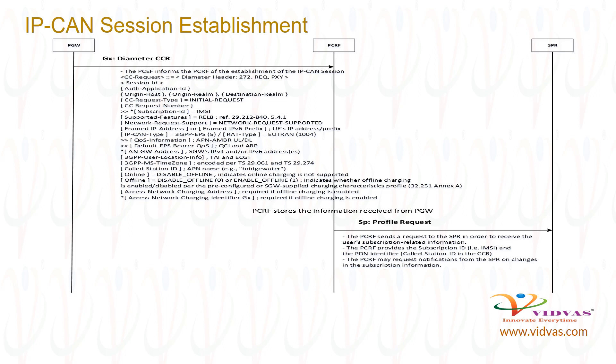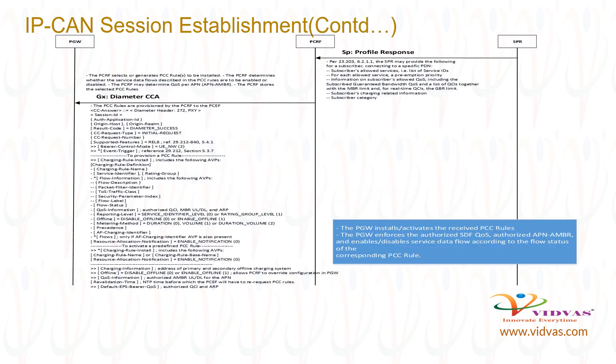The PCRF may request notifications from the SPR on changes in the subscription information. SPR sends a profile response to PCRF over the SP interface. SPR may provide the following for a subscriber connecting to a specific PDN: subscriber's allowed services, subscribed guaranteed bandwidth QoS, and a list of QCI together with the MBR limit and, for real-time QCI, the GBR limit.